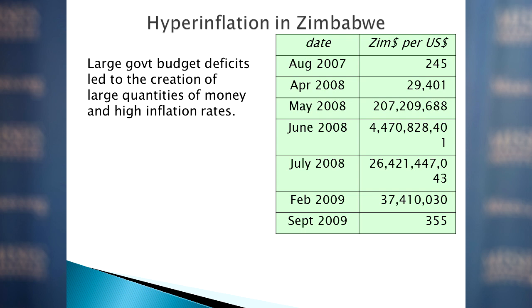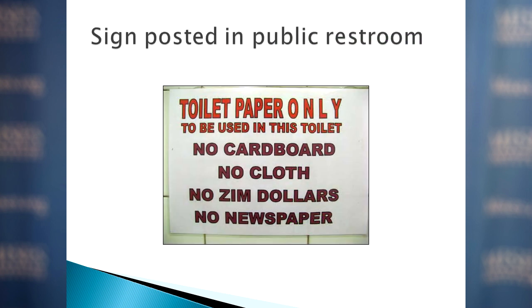In August 2007, 245 Zimbabwe dollars bought as much goods and services as one U.S. dollar. But as the government printed more and more money, notice how many Zimbabwe dollars it took to purchase one U.S. dollar. By May, it was 207 million. In June, it was four and a half billion. Then 26 billion Zimbabwe dollars equaled one U.S. dollar. It went up to 37 million — then they just took zeros off the currency, but it kept deflating after that.